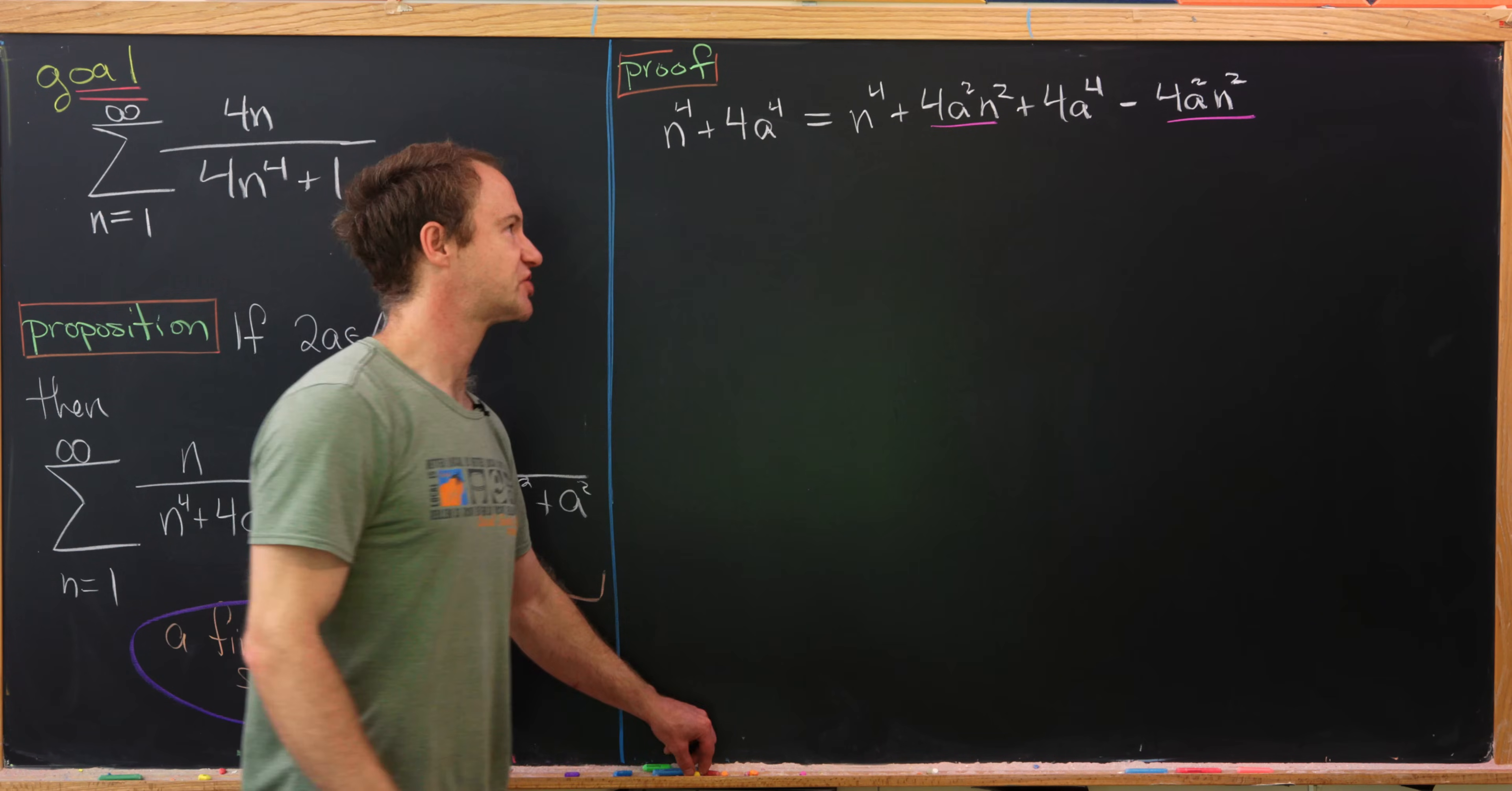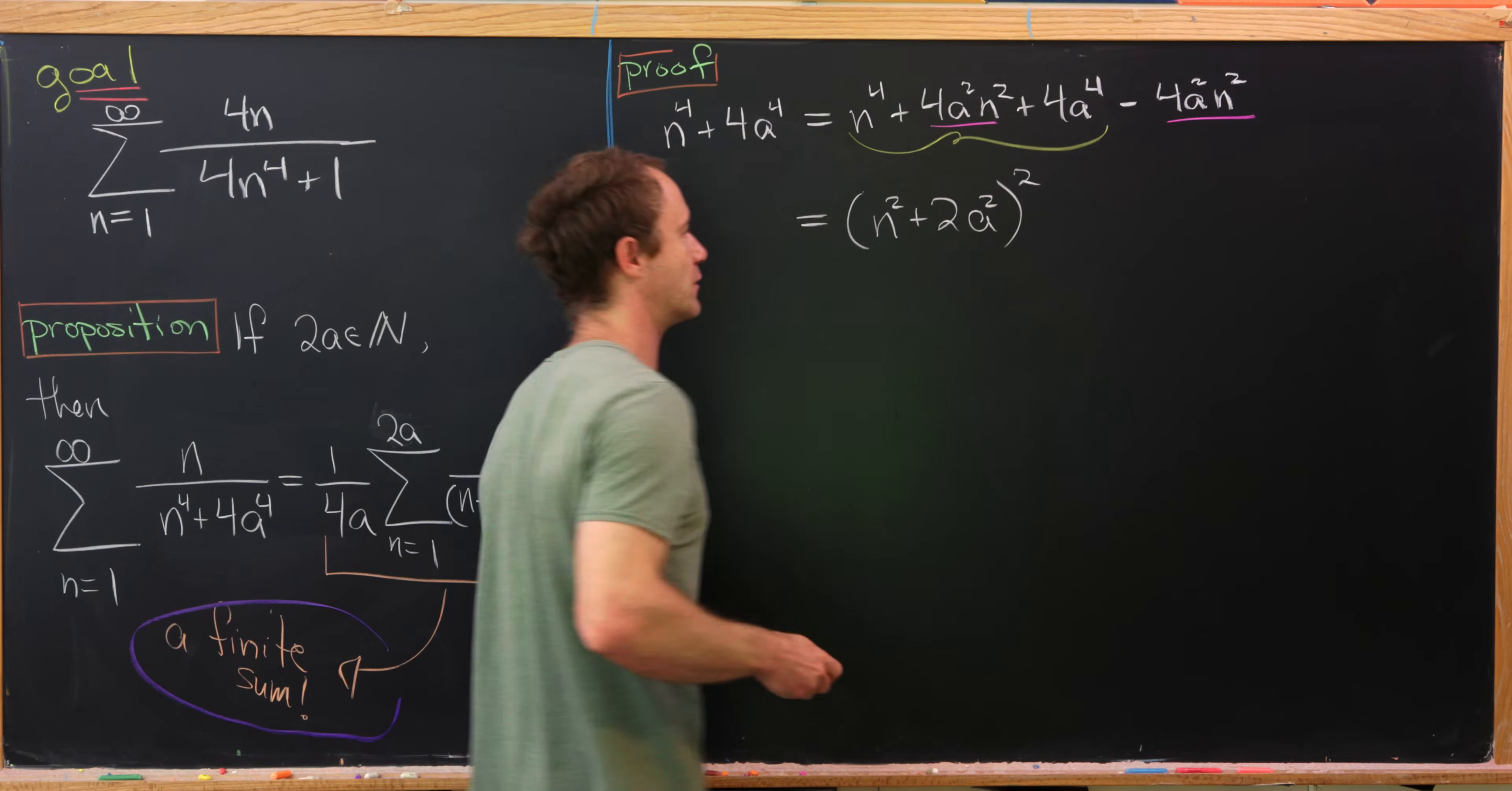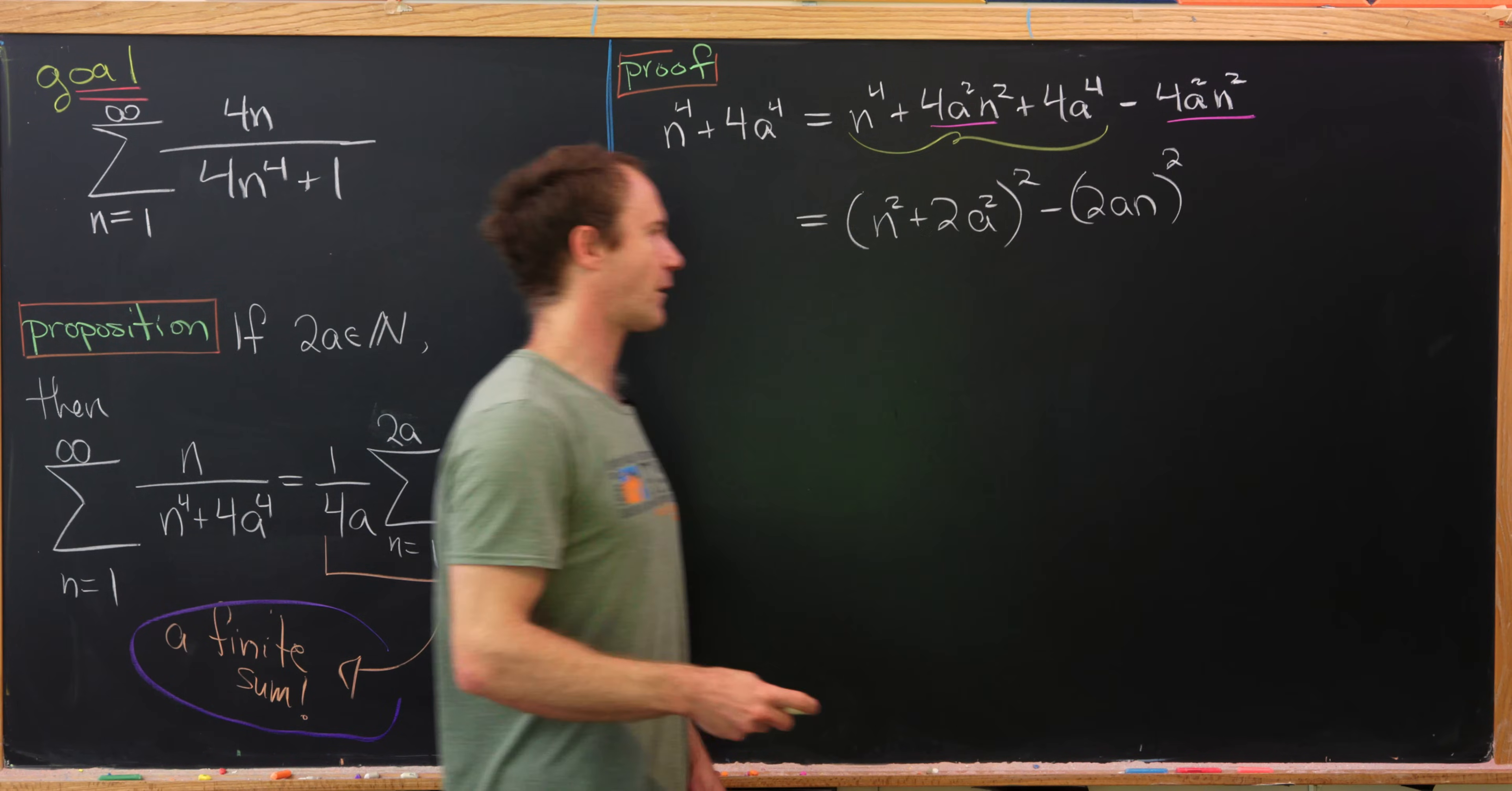But let's check it out. We can take these first three terms and recognize them as the square of a binomial. So what's that binomial? Well, it is n squared plus 2a squared. And then if we square that, we get exactly what I have underbraced in yellow. And then this other bit is also a perfect square. It is the perfect square 2a times n all squared.